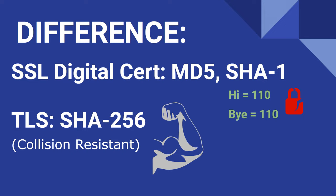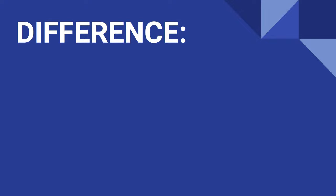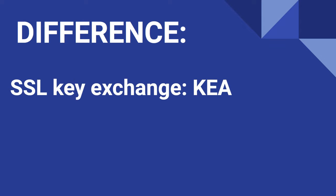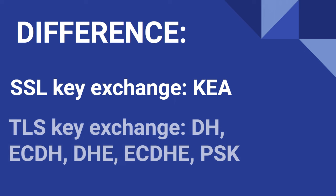There are also some differences in the algorithms used for key exchange. Both SSL and TLS can use RSA. SSL can also use KEA, or key exchange algorithm, which is based on Diffie-Hellman. TLS uses Diffie-Hellman or DH variations, which are asymmetric algorithms, or PSK, which stands for pre-shared key protocol.